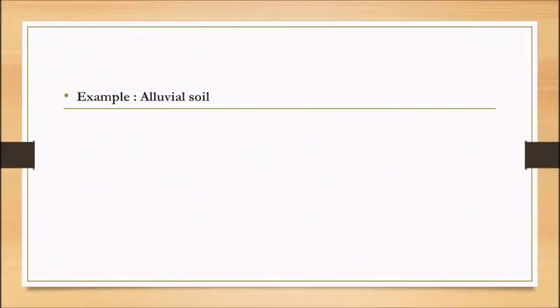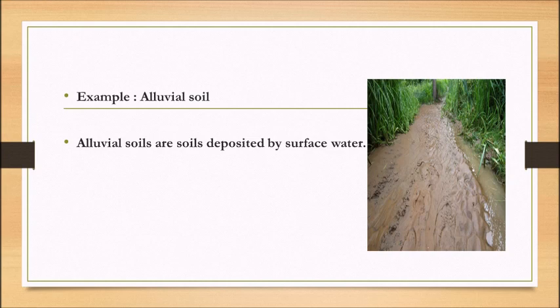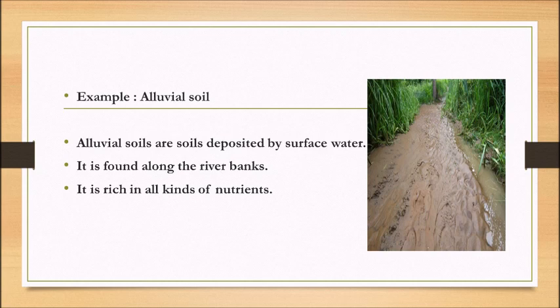Example: Alluvial soil. Alluvial soils are soils deposited by surface water. It is found along the river bank. It is rich in all kinds of nutrients. It is very fertile and good for growing a variety of crops.